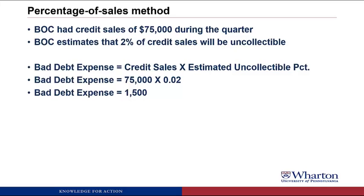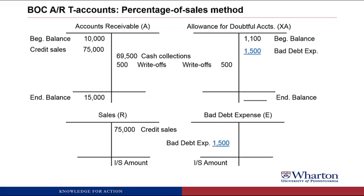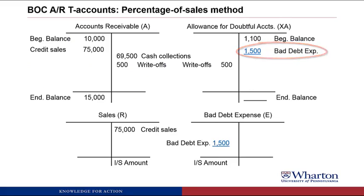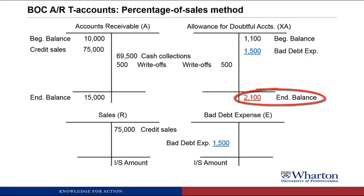Now that we have bad debt expense, we can calculate the ending balance for the allowance for doubtful accounts. We plug in the $1,500 of bad debt expense, add that to the beginning balance, subtract the write-offs, and come up with an ending balance of $2,100 for allowance for doubtful accounts.